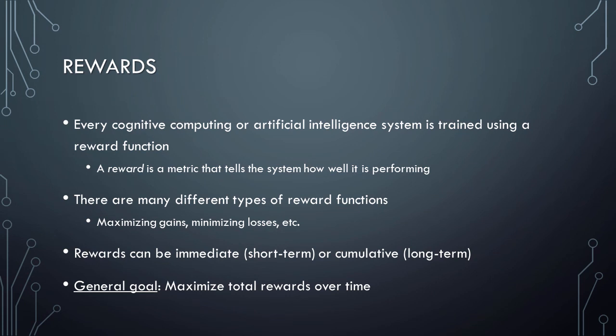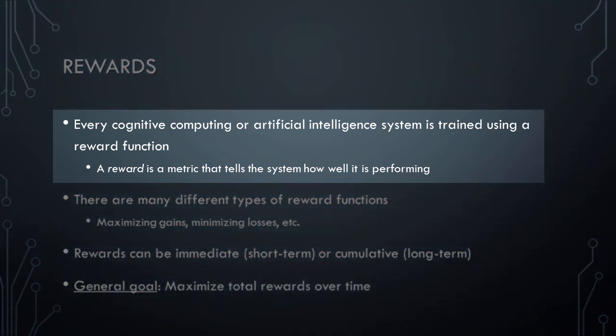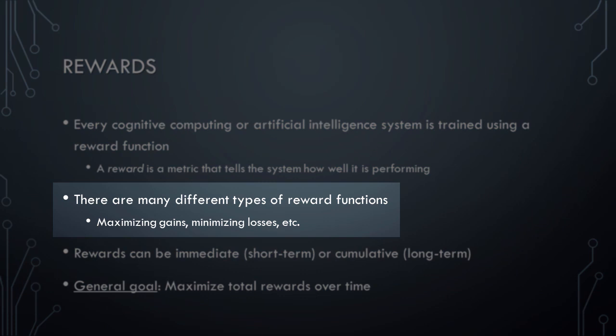Next, let's talk about rewards. As with the input and output system, rewards are a part of every AI or cognitive computing system. More specifically, every cognitive computing or artificial intelligence system is trained using some sort of reward function. In the context of AI and cognitive computing, a reward is simply a metric that tells the system how well it is performing. Many different types of reward functions are possible, but two of the most common reward structures are based on maximizing gains or minimizing losses. The best reward structure to use is highly context dependent. Put differently, there is no universally ideal reward. Instead, the best reward function to use depends on the nature of the problem that the system is trying to solve.